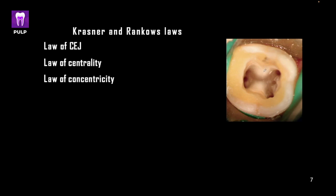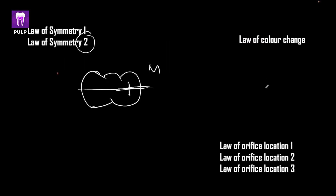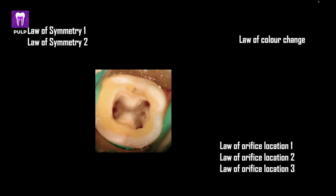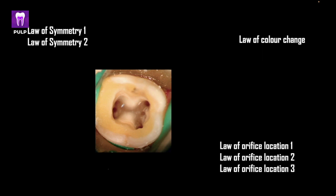The law of color change states the floor of the pulp chamber is always darker than the roof or walls of the pulp chamber. The law of orifice location 1 states that orifices of root canals are always located at the junction of the wall and the floor. The law of orifice location 2 states orifices are located at right angles to the floor-wall junction, creating a 90-degree angle. The law of orifice location 3 states that all canals of a tooth are located at the end of the developmental fusion lines, which serves as an identifying feature for root canal location.